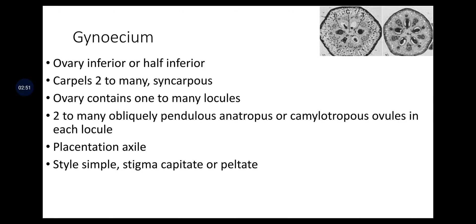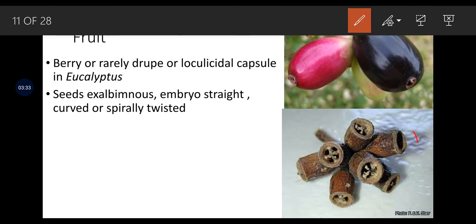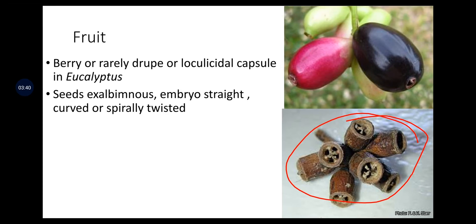Gynoecium is the female reproductive part. Ovary inferior or half inferior. Carpels 2 to many, syncarpous. Ovary contains 1 to many locules, with 2 to many obliquely pendulous anatropous or campylotropous ovules in each locule. Placentation is axile. Style simple; stigma capitate or punctate. Fruits are berry, or rarely drupe, or loculicidal capsule in Eucalyptus. Seeds exalbuminous; embryo straight, curved or spirally twisted.